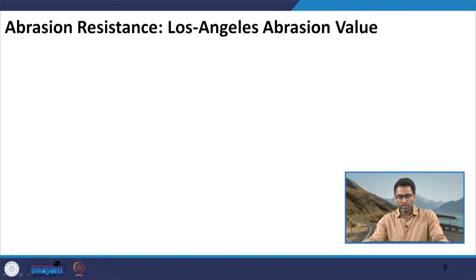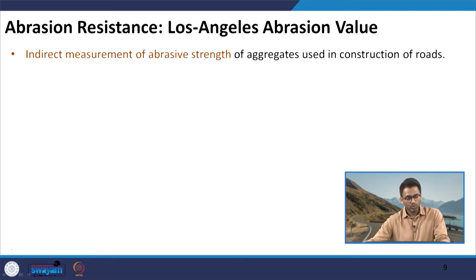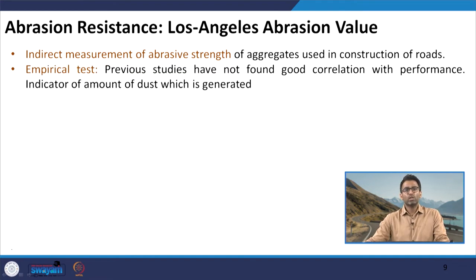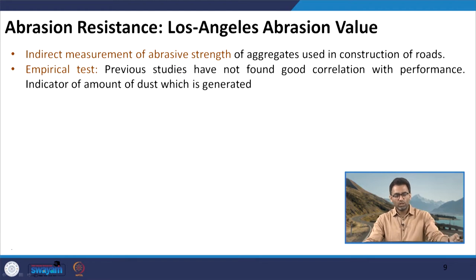Today, we will start with the Los Angeles abrasion value test which is used to know about the resistance of the aggregates to abrasive forces. This test is an indirect measure of abrasive strength of aggregates used in construction of roads. This abrasion can happen in different forms — typically it is assumed that abrasion could be because of the movement of vehicles, because of the frictional forces which act between the tyre and the pavement surface, that can cause abrasion of the aggregates specially on the surface of the pavement.